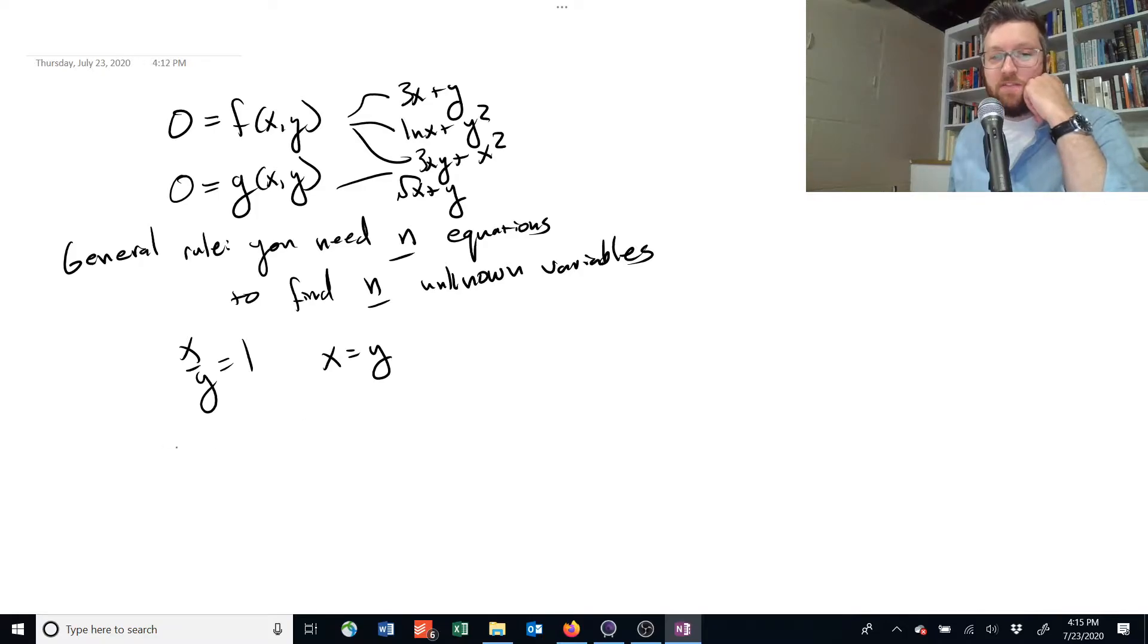If I gave you an additional equation, like x plus y is equal to 2, now I have two equations and I have two unknown variables. This should be enough information to solve it.